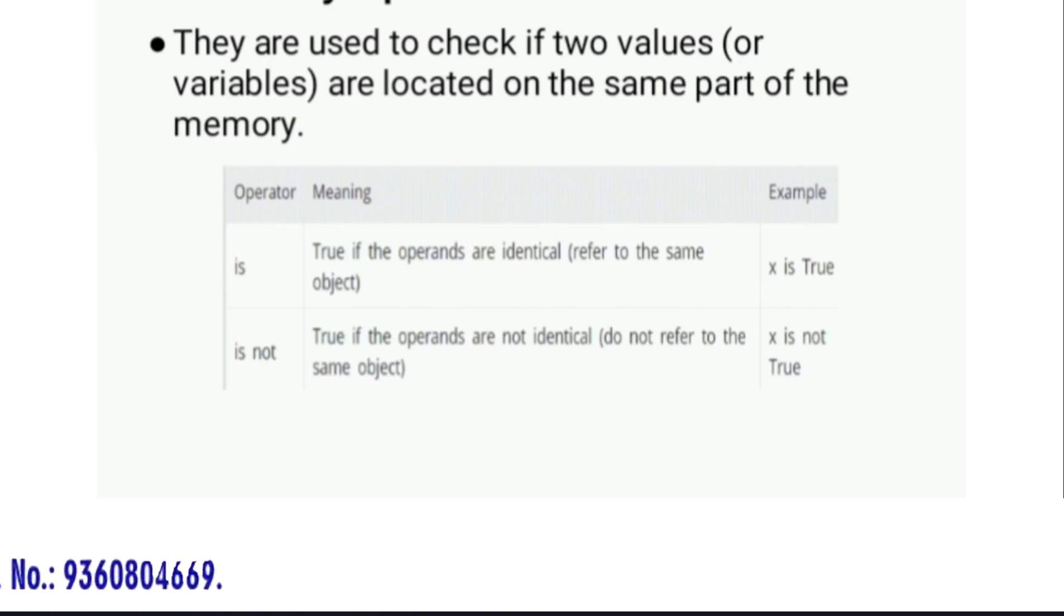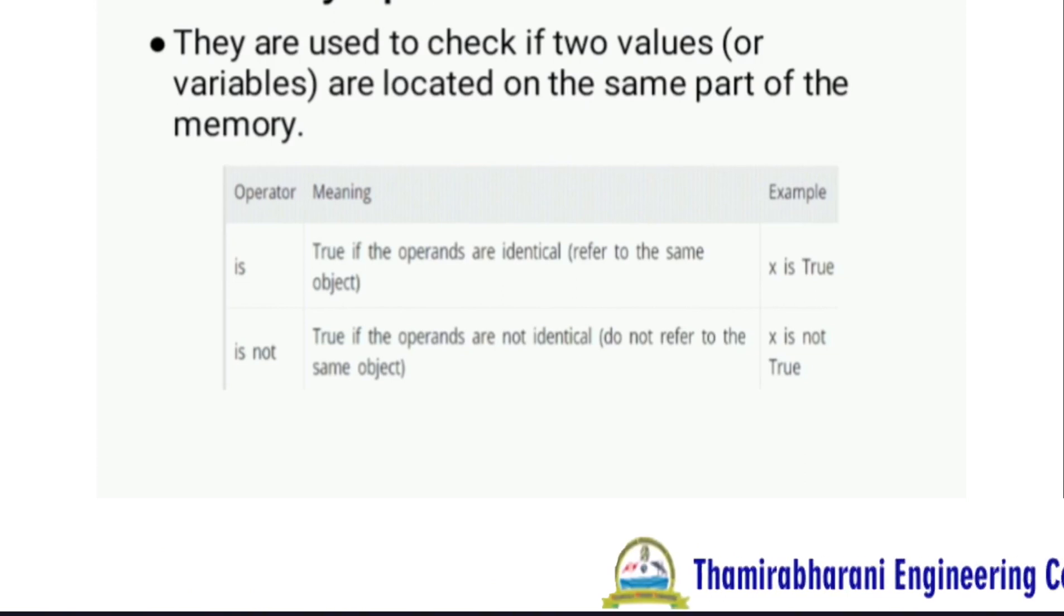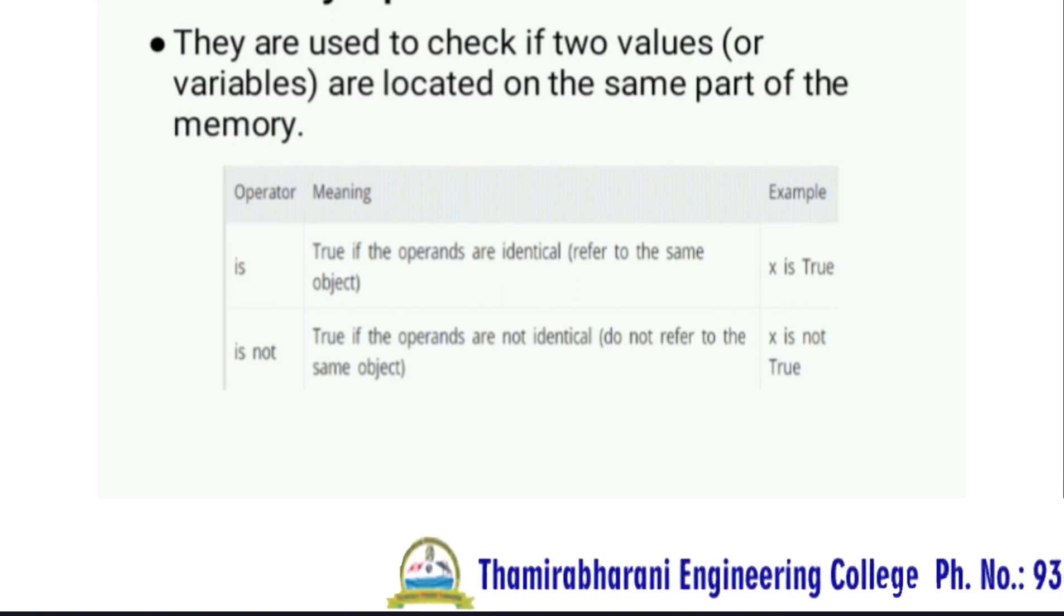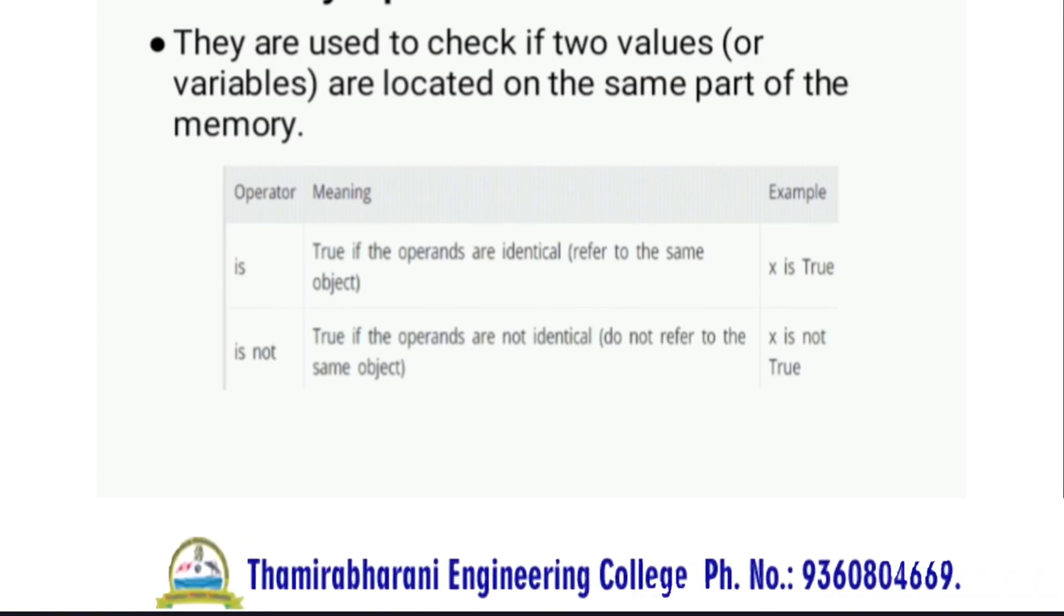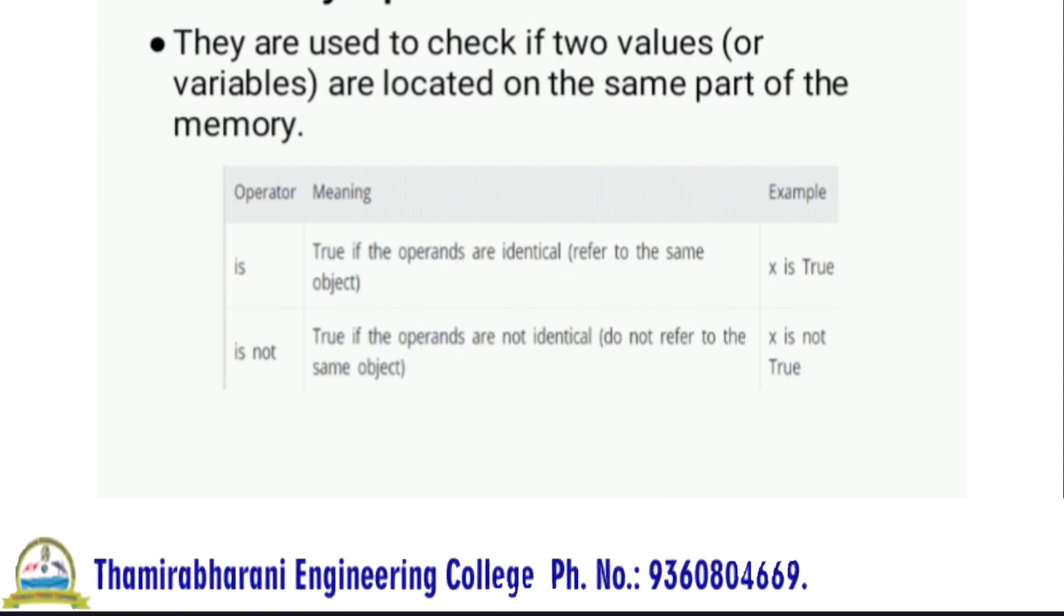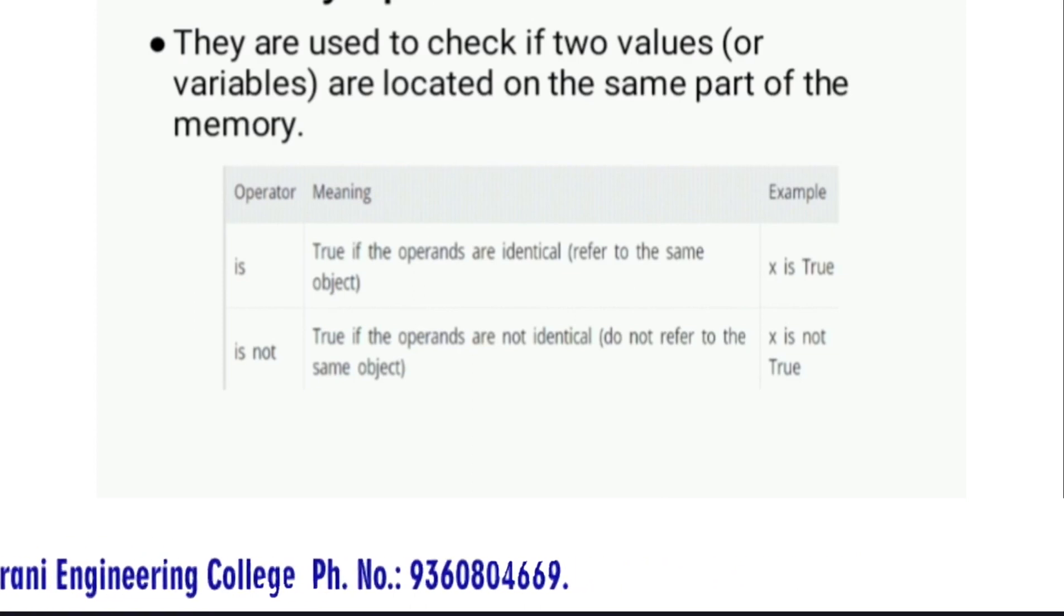Identity operators check if two operands are similar and stored in one location. When values are the same, those two variables are maintained in one memory location. So if we check the 'is' operator, it will return True.